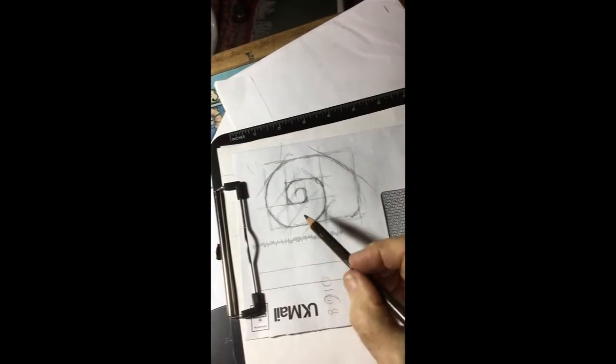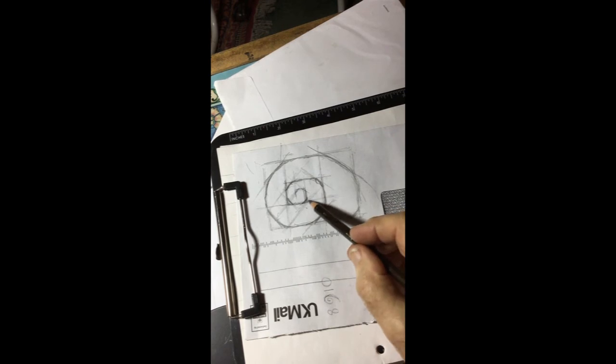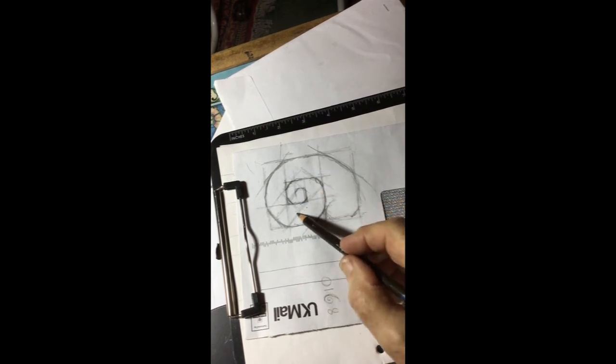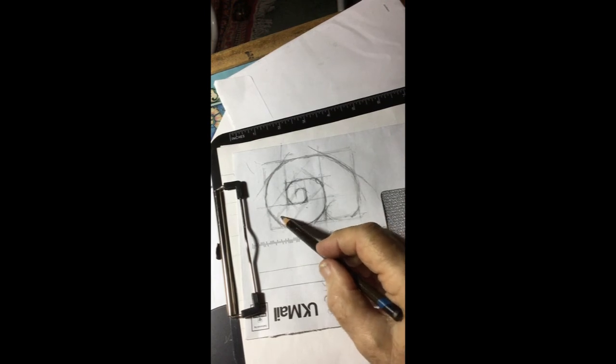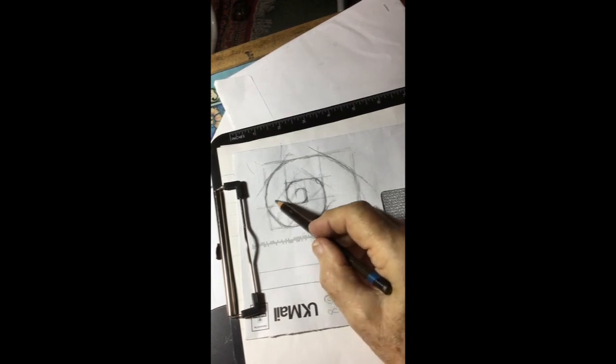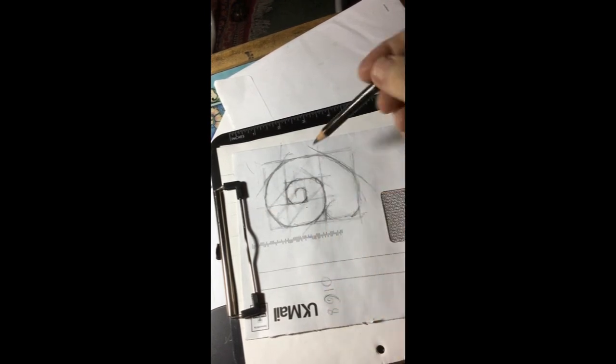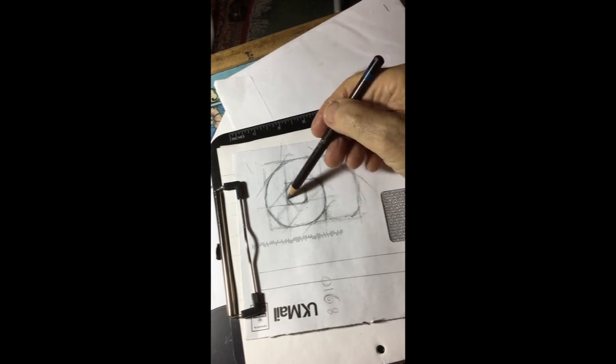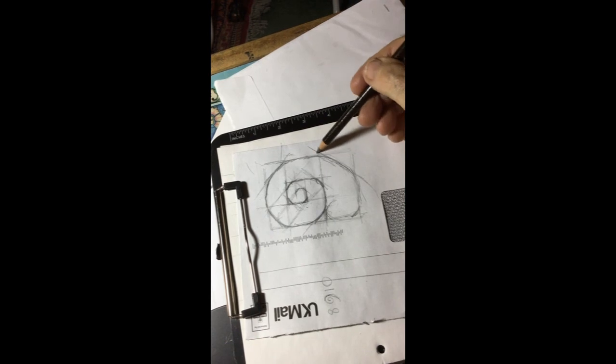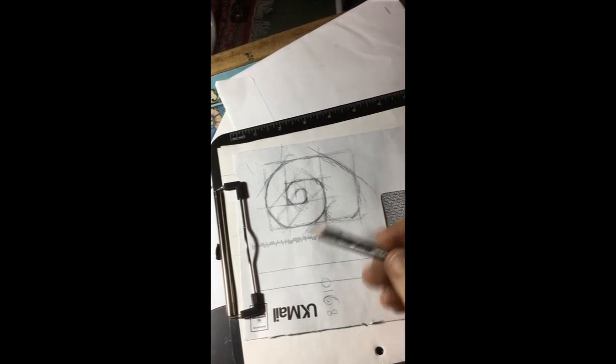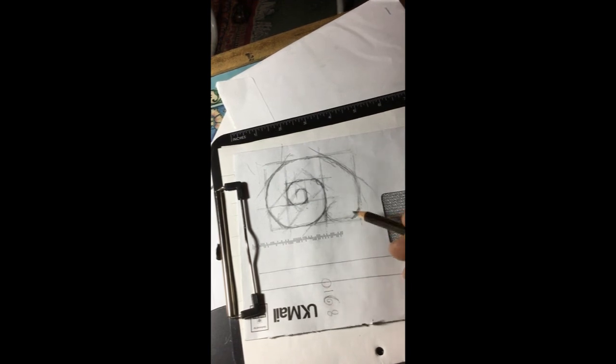But you can see how, if you want to be geometrical, too technical, which I don't really, but I'm just pointing this out. You can see how it can break up into sections like so. They're all little squares, so it's all built up geometrically in that sense, if you want to think in that way.